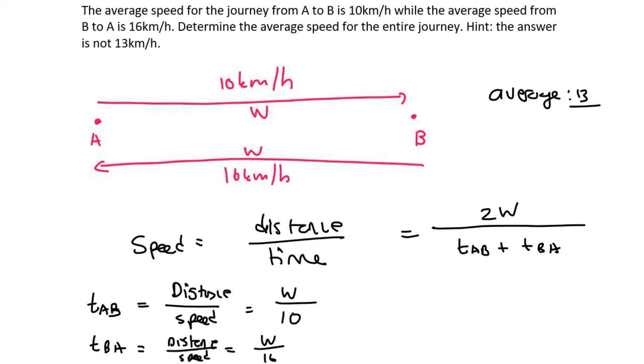So then what I'm going to do is I'm going to take those two expressions and put them into here. And so what we're going to find is that the average speed is going to be equal to 2W over W over 16 plus, sorry, W over 10 first, plus W over 16.